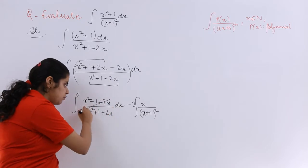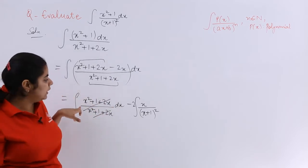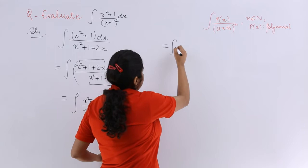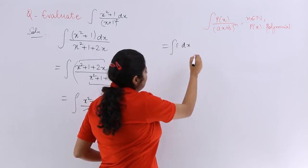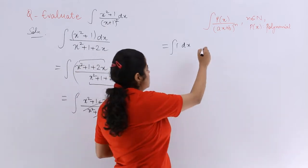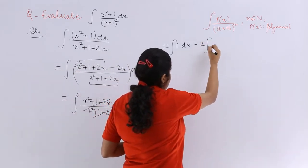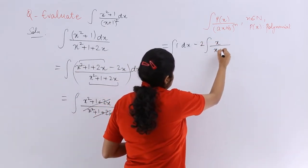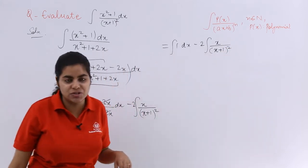Now very important, both these getting cancelled. So integration of 1 dx, which is always the variable itself, but later we can write. Let's see here, minus 2 coming outside, and x upon (x + 1) whole square is what is the story of the question.